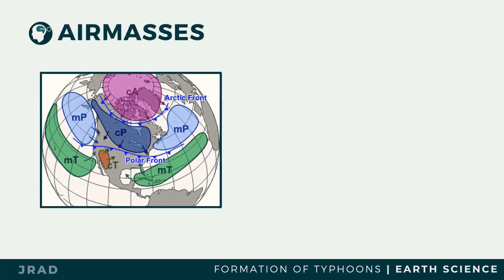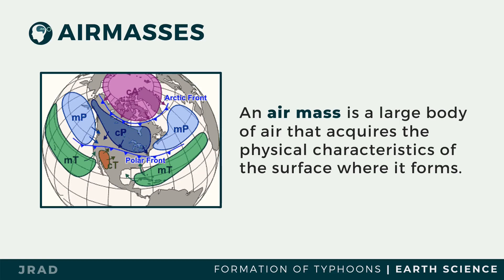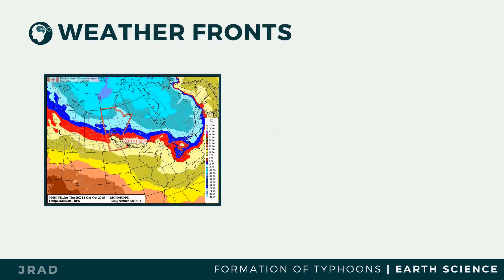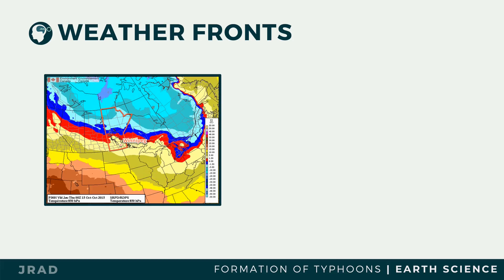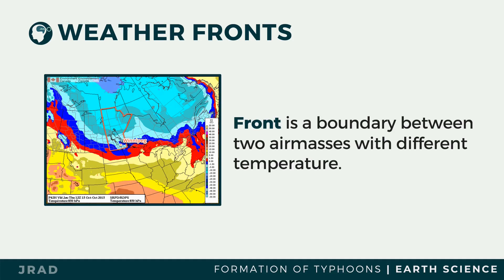To understand the process of how a typhoon forms, you need to be familiar with concepts such as air mass and fronts. An air mass is a large body of air that acquires the physical characteristics of the surface where it forms. The properties of an air mass depend on the surface area over which it is moving. Air masses do not mix if they do not have the same temperature and moisture content, thus forming a weather front or a boundary between two air masses.